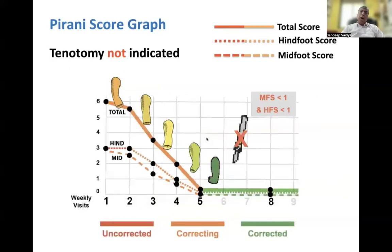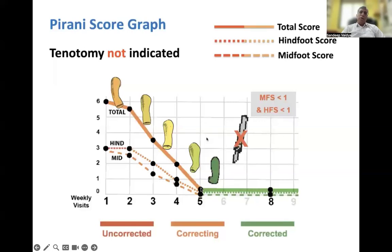The score also helps to identify cases where tenotomy is not indicated. For example, in this case the Pirani score dropped from 6 to 0 at the end of 5 casts, and the hindfoot score also came down to 0. Therefore, in this case there is no indication for performing TA tenotomy.